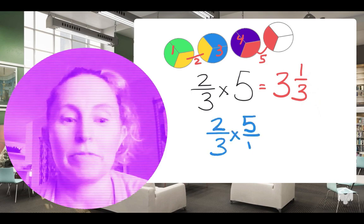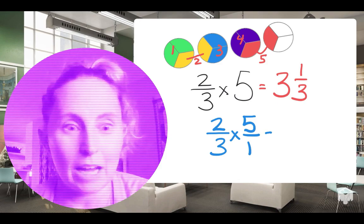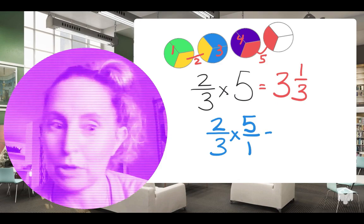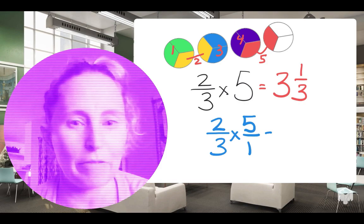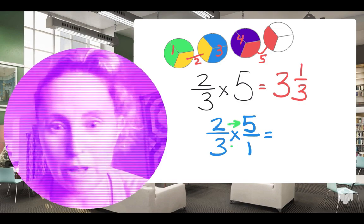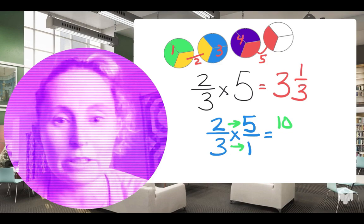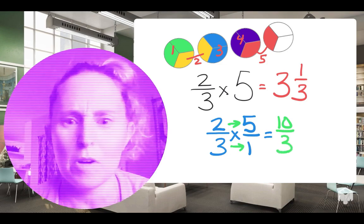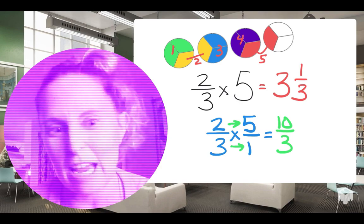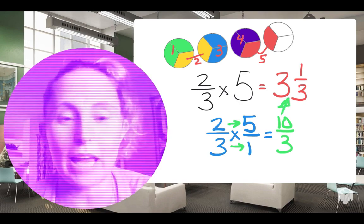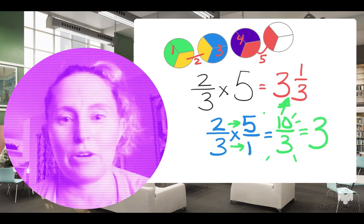Two-thirds times five over one. Anytime I have a whole number, I can just put it over one to make it behave like a fraction. And again, I just multiply across and multiply across. I'm going to end up with ten-thirds. Wait a second. I thought the answer was three and a third. It's the same. Remember our little cowboy going into the saloon? Ten-thirds is the same as three and a third.